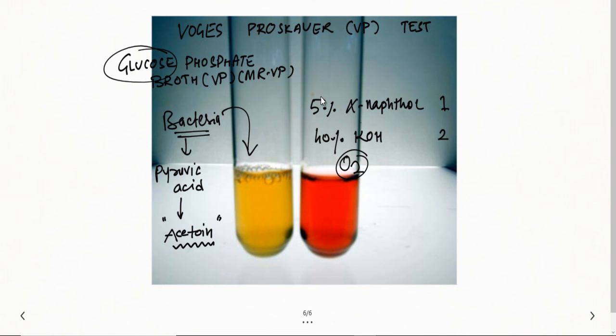If red color is seen, the VP test is positive. If you do not see any red color after adding the reagents, the Voges-Proskauer test is negative.